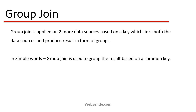Usually we have multiple data sources, or multiple tables of a database, and both tables share something in common — for example, the ID of one table belongs to another table. We then apply Group Join on both data sources, and it produces results in the form of groups. In simple words, Group Join is used to group results based on a common key.